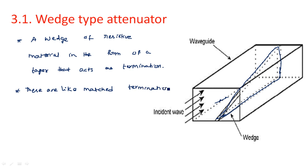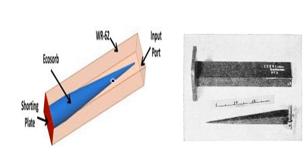These act as match terminators and no reflections occur — ultimately there should be no reflection. The blue line in the figure is the wedge-type material inserted inside the waveguide. When power goes inside, it is simply absorbed. When the wedge-type material is taken outside, you can see its shape — it is a wedge-type resistive cord.